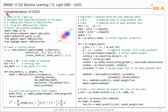Next, let's implement GOSS in code using two methods. The first is to add the GOSS feature to the XGBoost classifier. The second method is to use the LGBM classifier library. We can easily implement this using the LGBM library, but to better understand how the GOSS algorithm works, let's implement it from scratch.